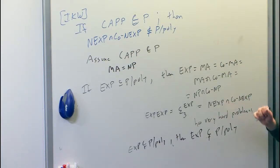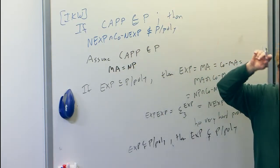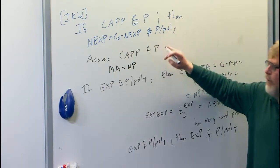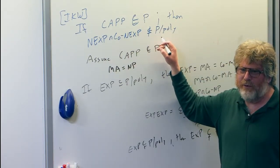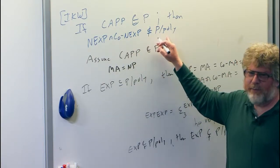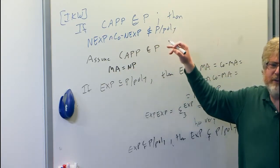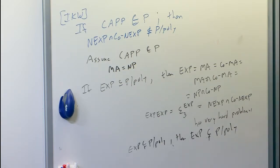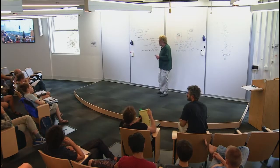We could do a lot more work to get quantitative versions that are tighter — assuming CAPP has a sub-exponential algorithm, what consequence do you get? Assuming it's in polynomial time, can we get a better circuit lower bound than just super-polynomial? There's more work to be done, but this is the basic idea. The bell tolls. Thank you.